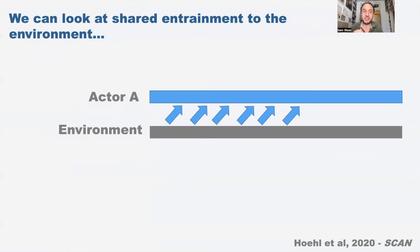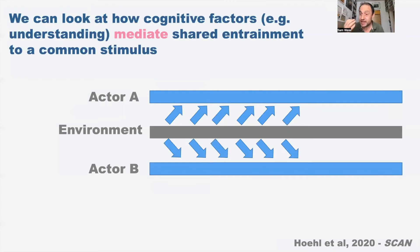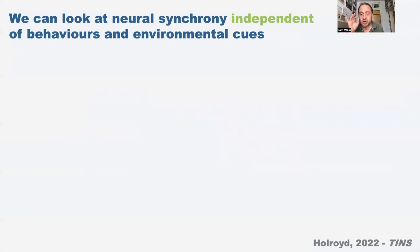We can also look at shared entrainment to external features of the environment. We know that the brain synchronizes to speech, so if two people are listening to the same speech stream you'd expect their brains to show similar patterns of activity. For most people's definition of brain-to-brain entrainment this isn't enough — if two people in separate rooms watching TV at the same time show similar brain activity, many would say that's not really brain-brain entrainment. But we can look at cognitive factors like how shared understanding mediates shared entrainment to a common stimulus. A recent paper by Clay Hoyrow in Trends in Neurosciences explicitly excludes inter-brain entrainment that's independent of behaviors and environmental cues.